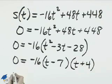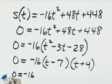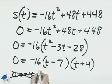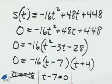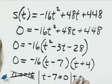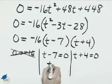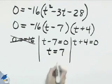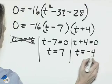Set each of these equal to zero. Zero equals negative 16, that doesn't make any sense so we can disregard it. t minus 7 equals 0 and t plus 4 equals 0. Add 7 to both sides here and t is equal to 7. Subtract 4 from both sides and t equals negative 4.